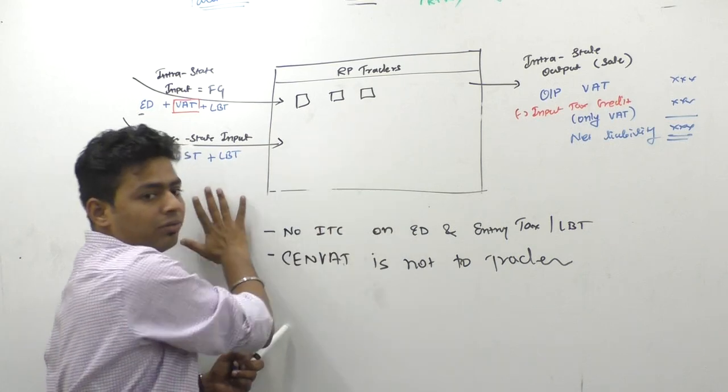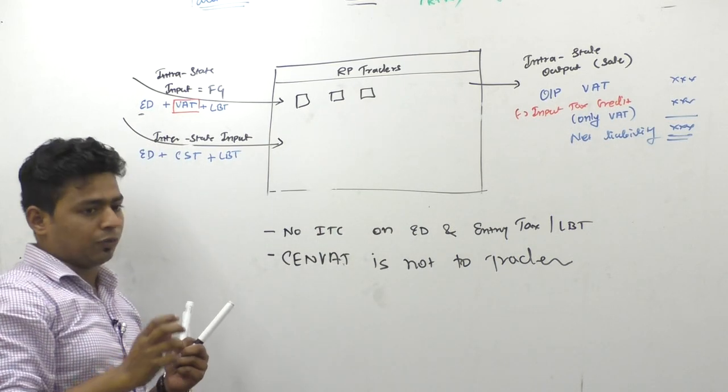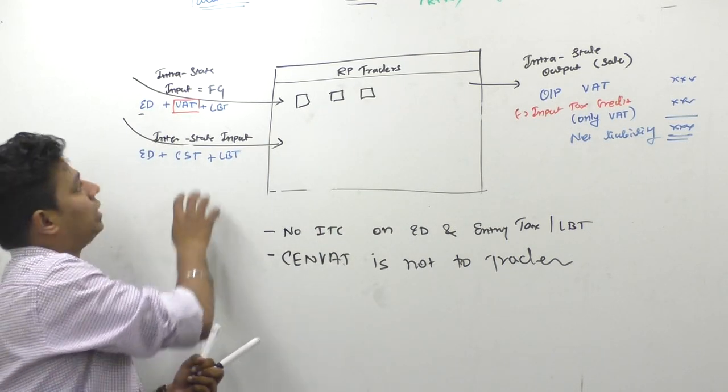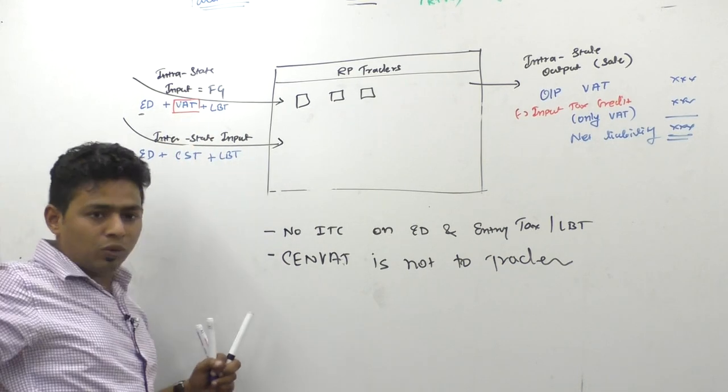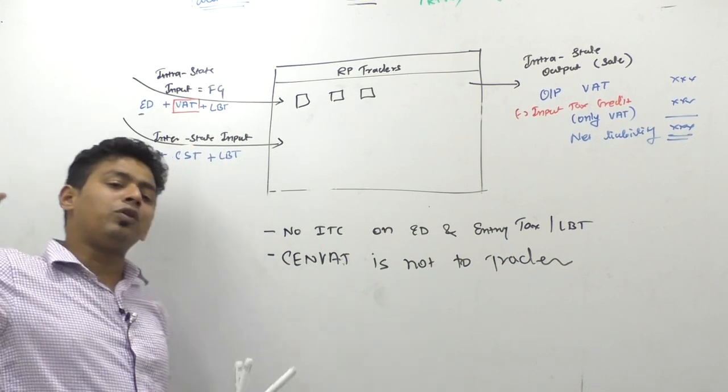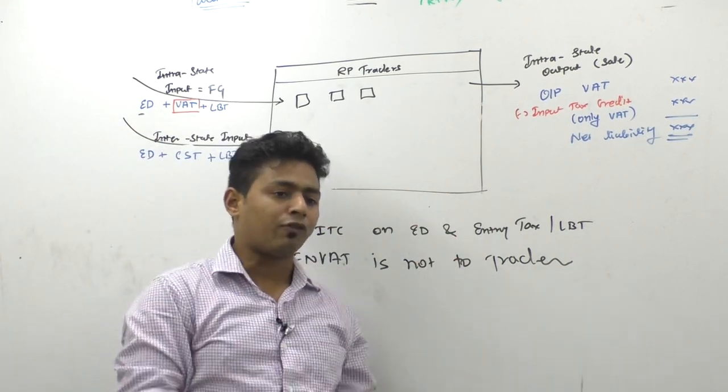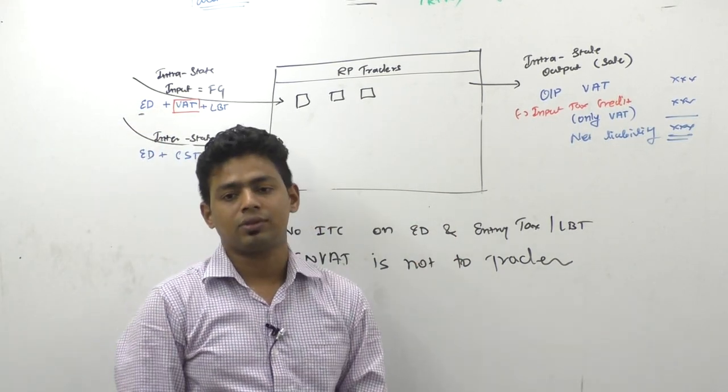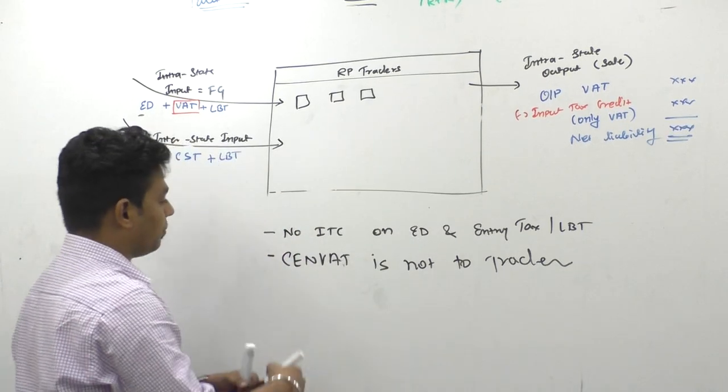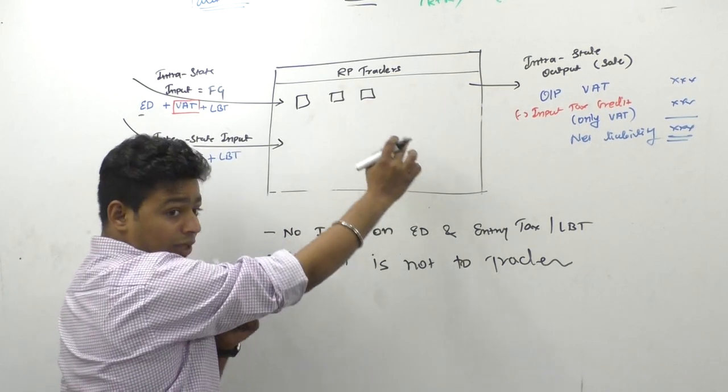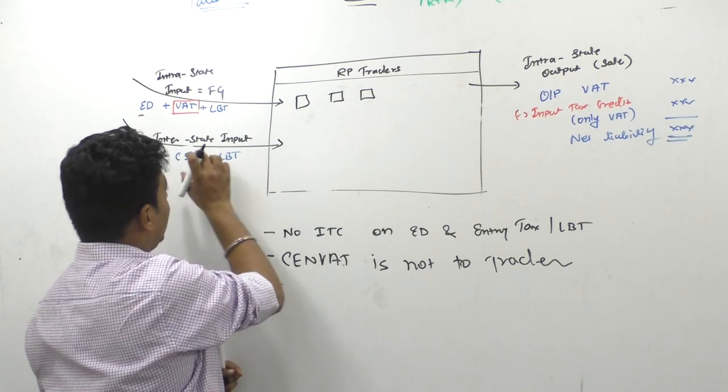Now you tell me why CST credit is not given by Maharashtra government. Why they are resisting to give credit? First of all you did not pay this amount to Maharashtra. But CST you pay to which government? And how can you ask tax paid to Gujarat government and set off from Maharashtra government? That's why one more problem in existence system. Trader was having no ITC on interstate purchases.